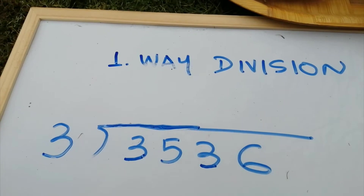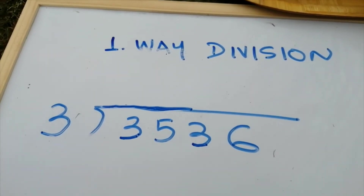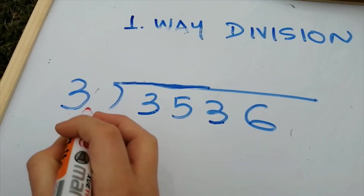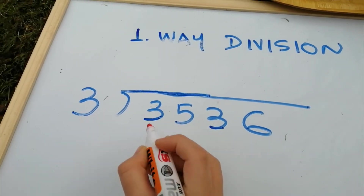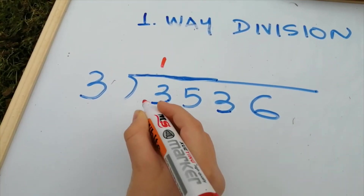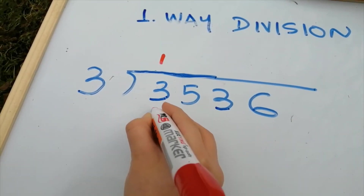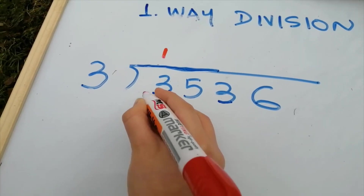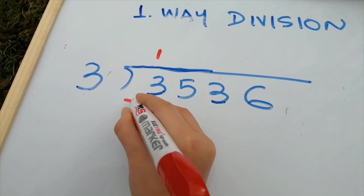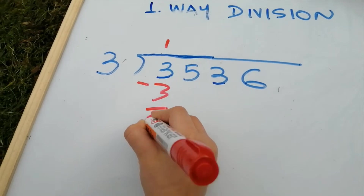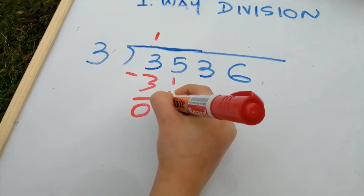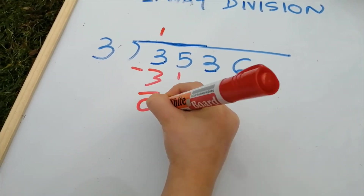And this is way one to do division. How many times is three in three? One. Three times one — minus three. Three minus three equals zero. Put the next number down. Five.